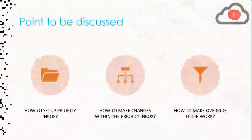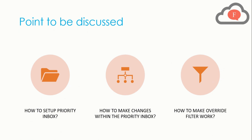Let's go further and talk about the points we'll discuss today. We are going to cover everything in three parts. First, I will tell you how to set up a priority inbox in Gmail. After that, I'll give you a detailed description of how to make changes within the priority inbox — like applying filters and managing different panes. Finally, I will tell you how to make the override filter work in your Gmail account.